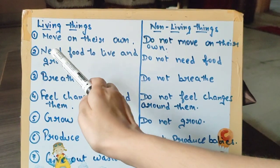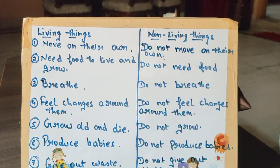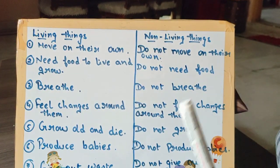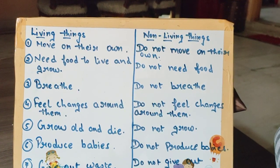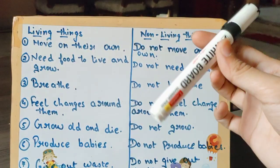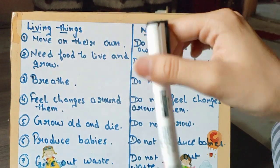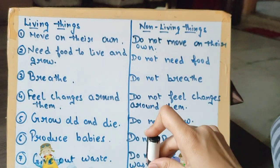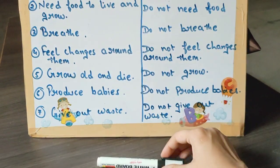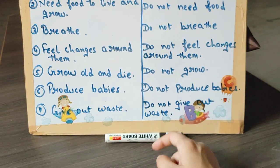First point: living things move on their own, but non-living things do not move on their own. For example, this is a non-living thing — I'm moving it, it is not moving by itself. See here, it's not moving. I'm just pushing it, then it's moving.